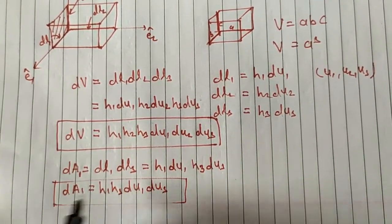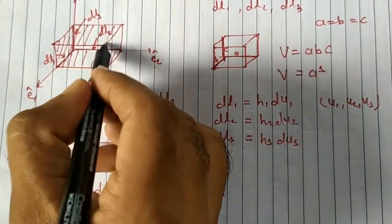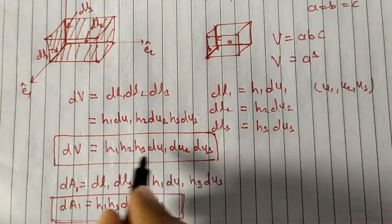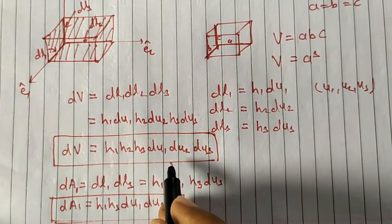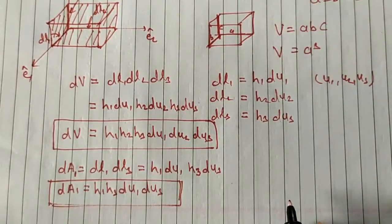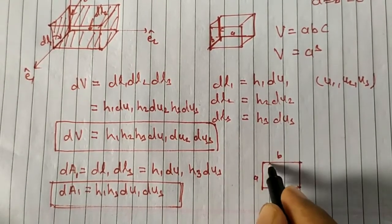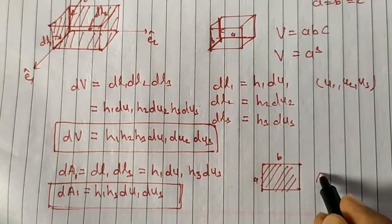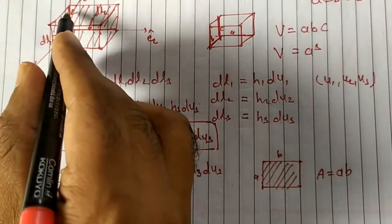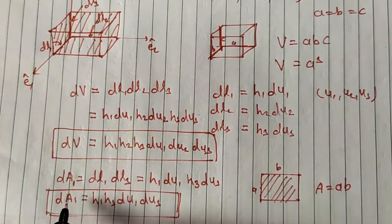Similarly, I can find the other areas. This is the expression for the area element, and this is the expression for the volume element in a curvilinear coordinate system. Just as the area of a rectangle with sides a and b is a·b, here dL1 multiplied by dL3 gives area dA1.